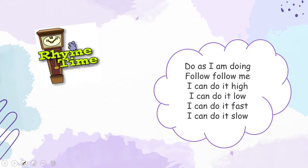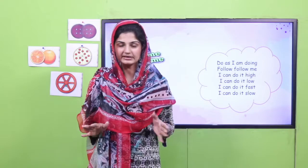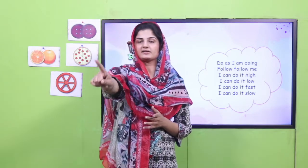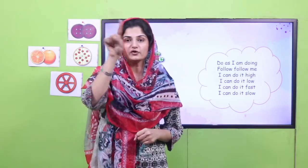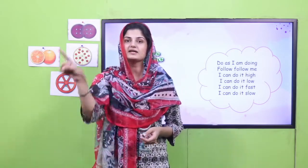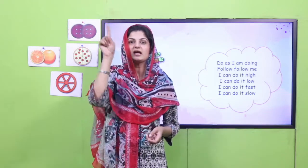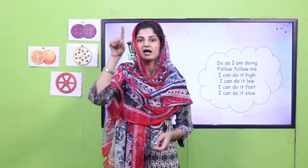So it's rhyme time! I want you to sing the poem with me. Get up from your seat and come forward — this poem is all about action. Stretch your arm like this and follow my movement. Let's start: 'Do as I'm doing, follow follow me' — I'm making a circle in the air. 'Do as I'm doing, follow follow me. I can do it high, I can do it low, I can do it fast, I can do it slow.'